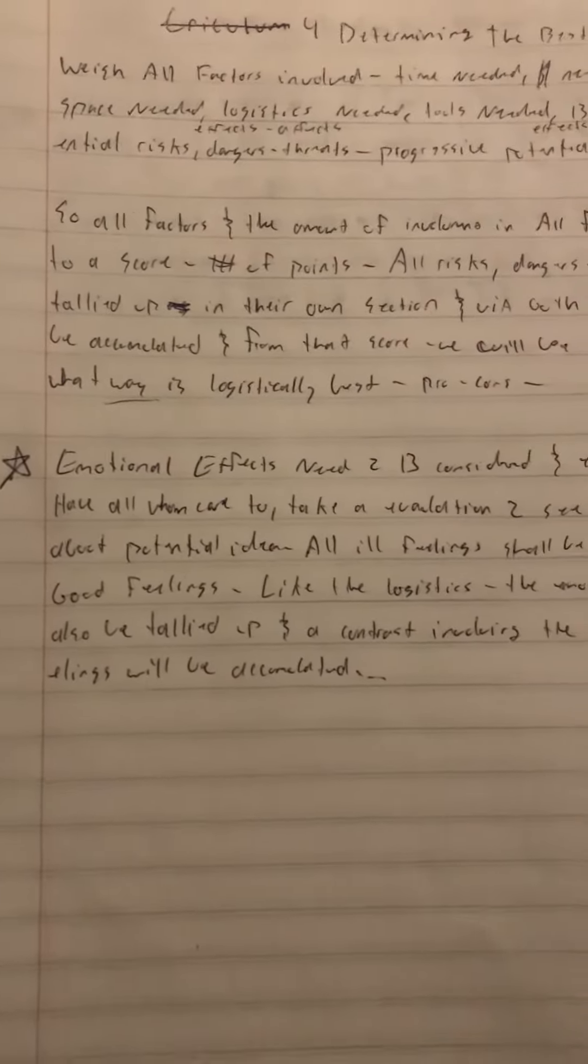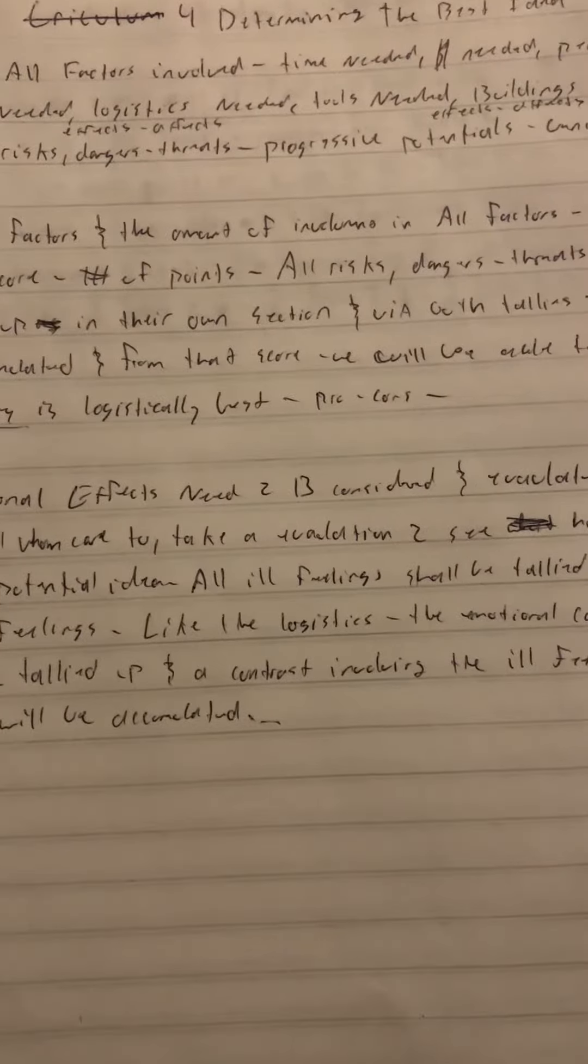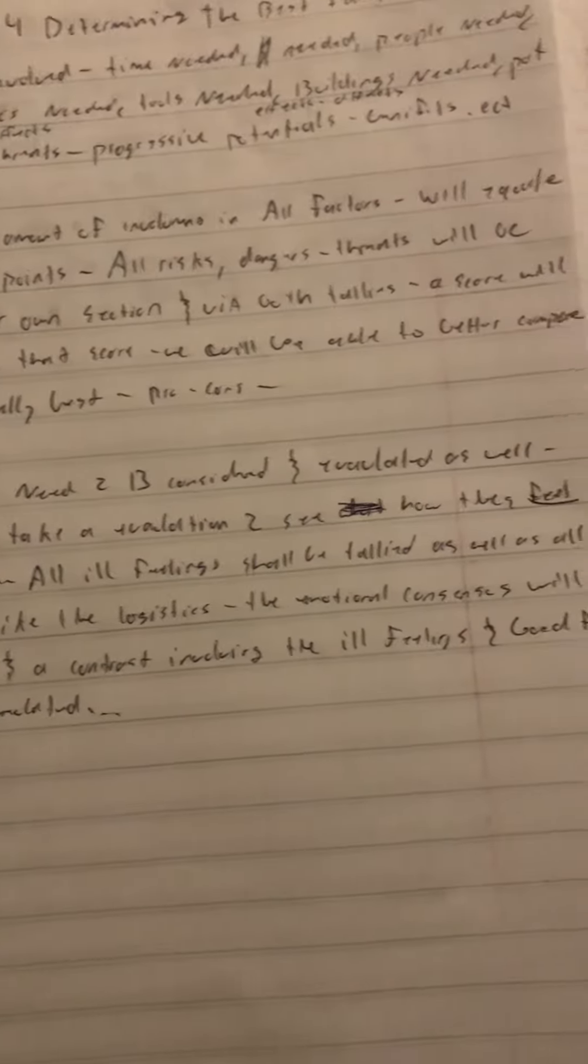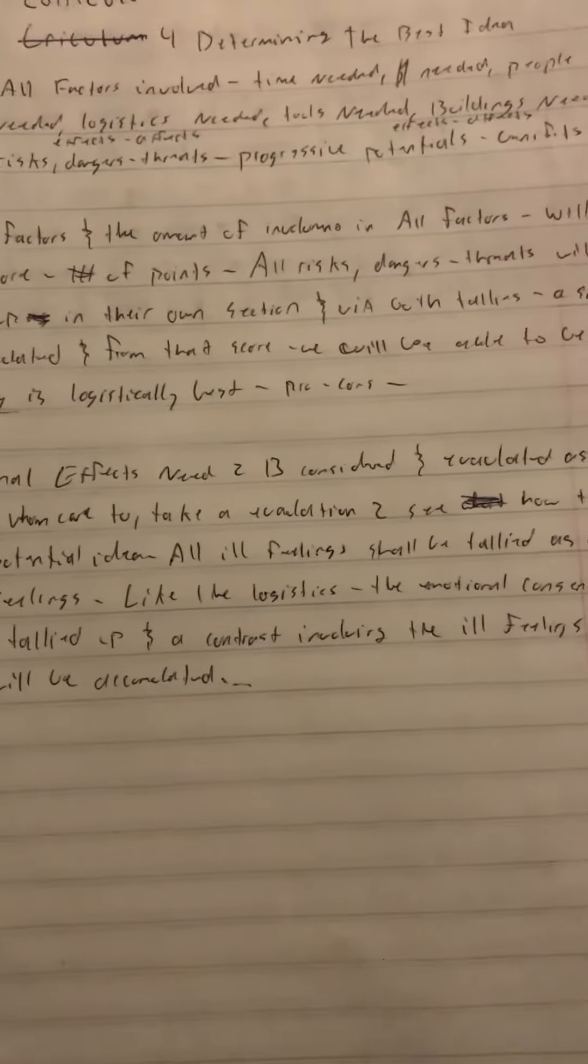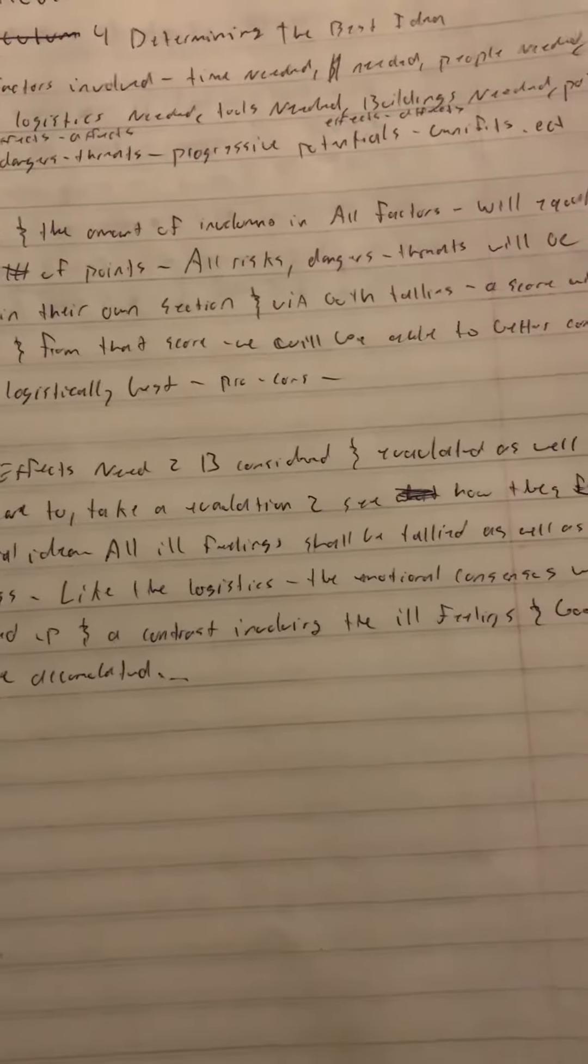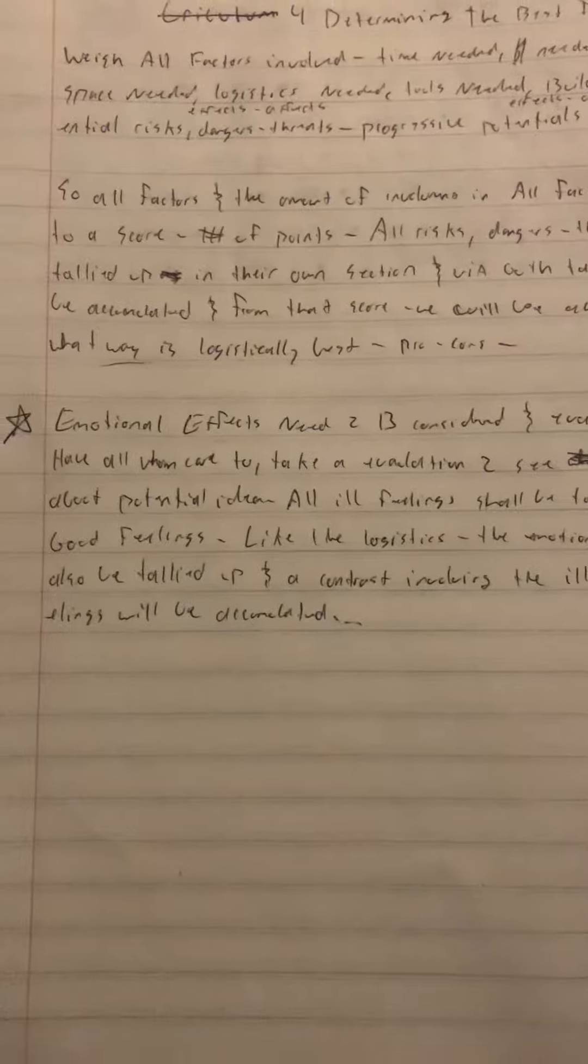So all factors and the amount of involvement in all factors will equate to a score, number of points. All risks, dangers, threats will be tallied up in their own section.